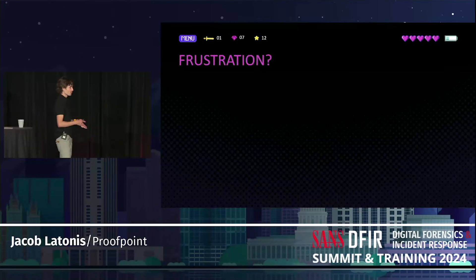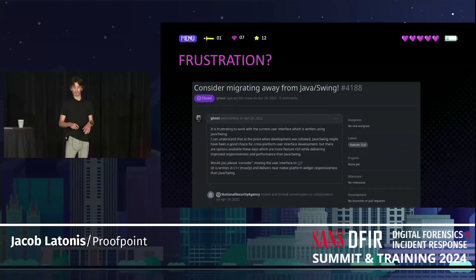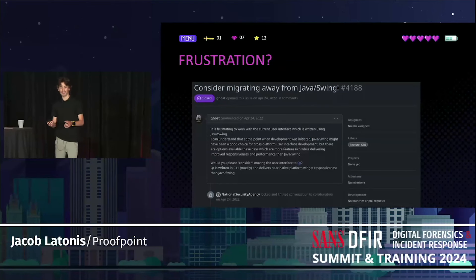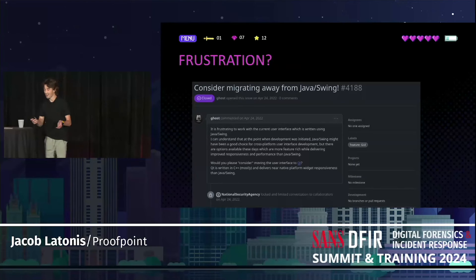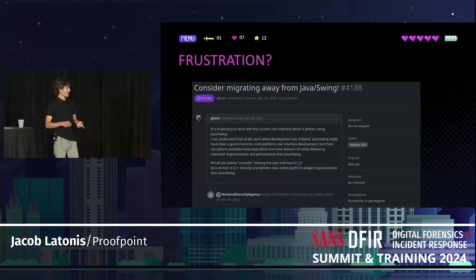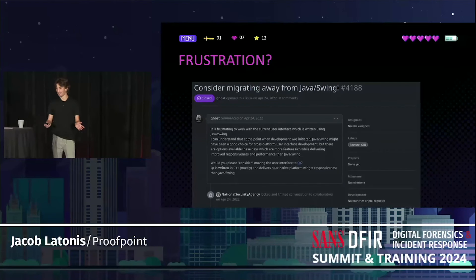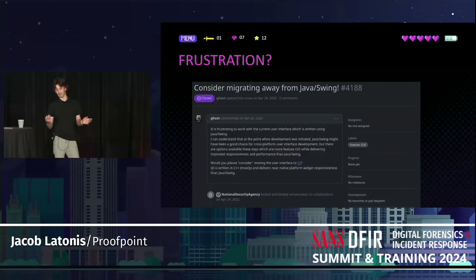If you're frustrated with Java, plugins, or UI/UX, other people have been too. There's actually been a lot of animosity in the community about why Ghidra is written in Java and Swing. I don't want to say you shouldn't speak out about it, but I will say that one account complained about it, their GitHub account no longer exists, and the NSA locked the conversation down. I'll allow you to draw your own conclusions. If you want to keep your GitHub account, maybe don't say anything.